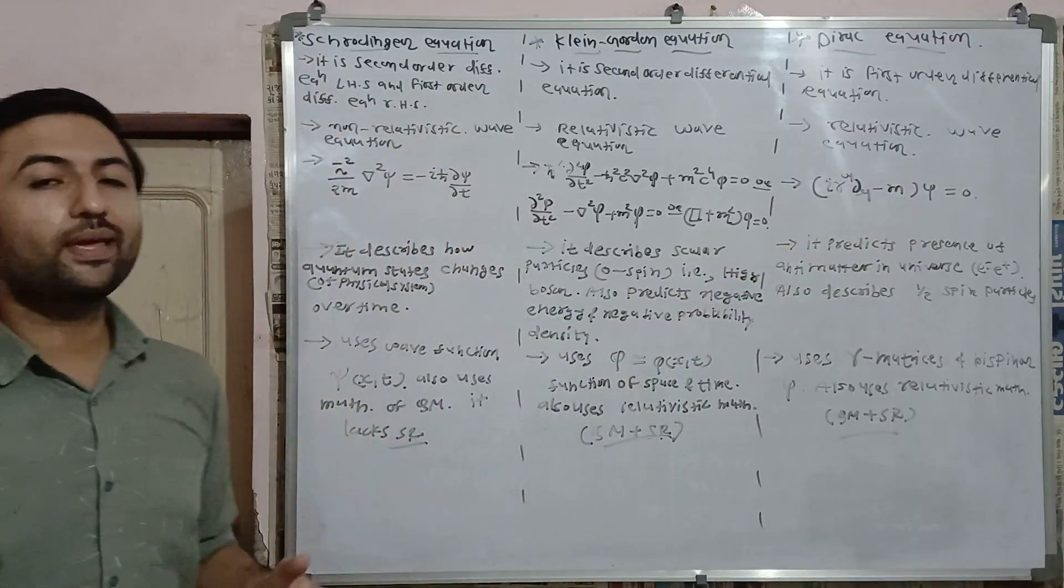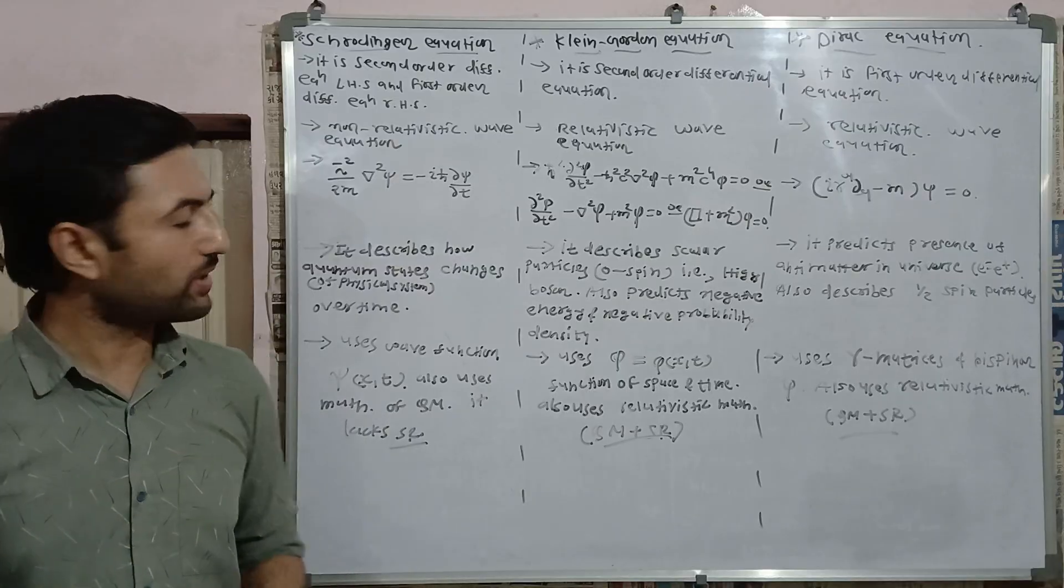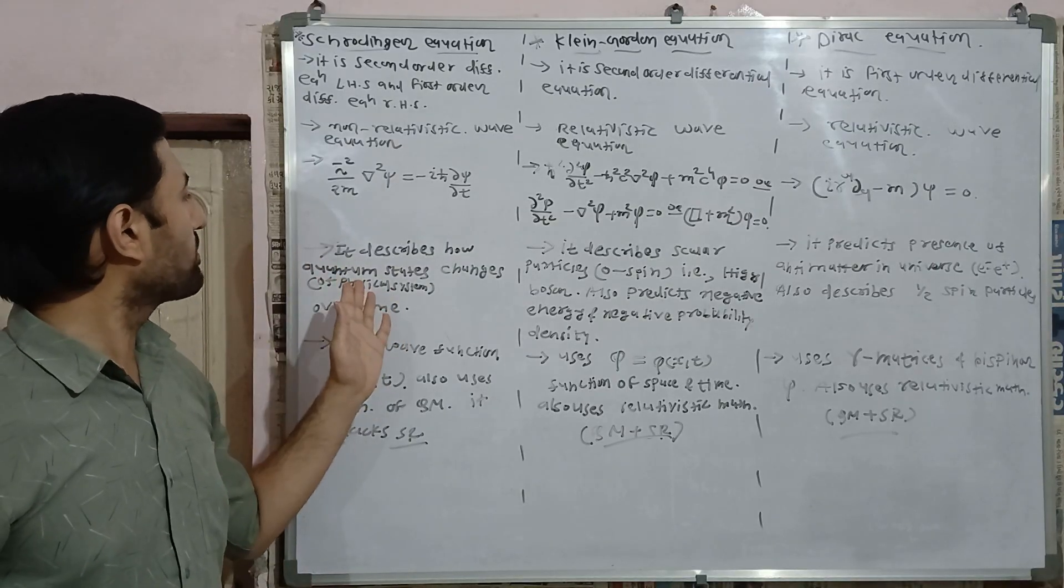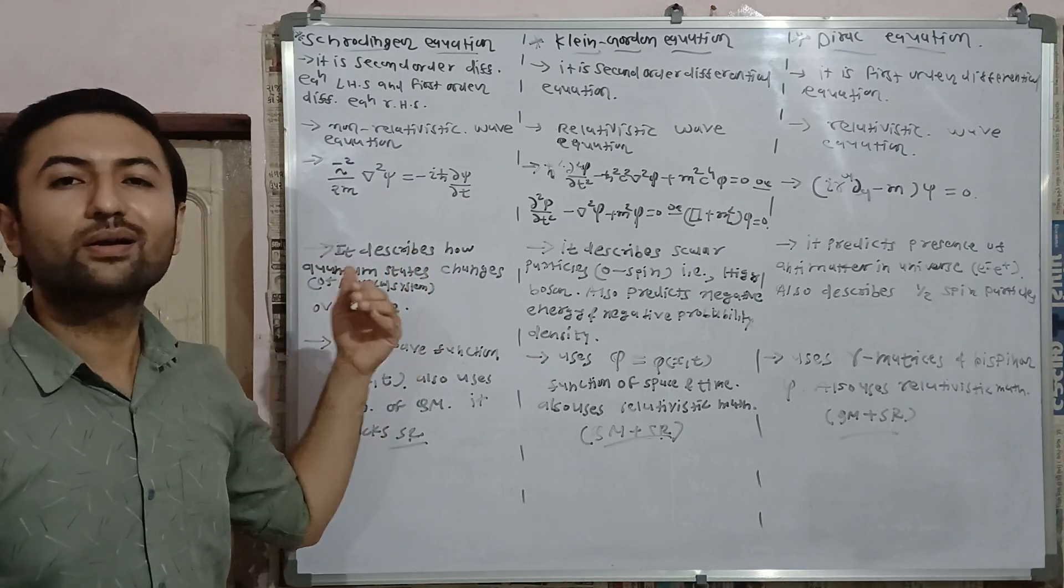So let us see actual physical significance of these three equations. Schrodinger equation describes how quantum states of physical system changes over time.